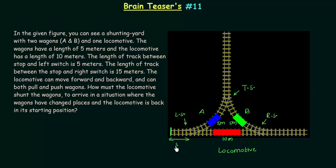So this length is equal to 5 meters, and because of this, the locomotive cannot change the track on the left switch because the locomotive has a length of 10 meters and the length of track is only 5 meters.